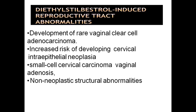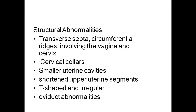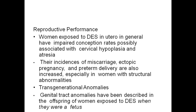Diethylstilbestrol (DES)-induced reproductive tract anomalies include development of rare vaginal clear cell adenocarcinoma, increased risk of developing cervical intraepithelial neoplasia, small cell cervical carcinoma, and vaginal adenosis. Non-neoplastic structural abnormalities include transverse septum, circumferential ridges involving the vaginal cervix, cervical collar, smaller uterine cavity, shortened upper uterine segment, and T-shaped irregular oviduct abnormalities. Women exposed to DES in utero generally have impaired conception rates, possibly associated with cervical hypoplasia and atresia. Their incidence of miscarriage, ectopic pregnancy, and preterm delivery are also increased. Transgenerational anomalies: genital tract anomalies have been described in offspring of women who were exposed to diethylstilbestrol when they were fetuses.